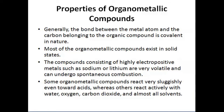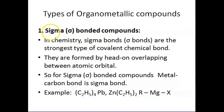We have different types of organometallic compounds. The first type is sigma bonded compounds. Sigma bonds are the strongest type of covalent chemical bond and are formed by head-on overlapping between atomic orbitals. For sigma bonded compounds, the metal-carbon bond is a sigma bond, and here are a few examples of sigma bonded compounds.